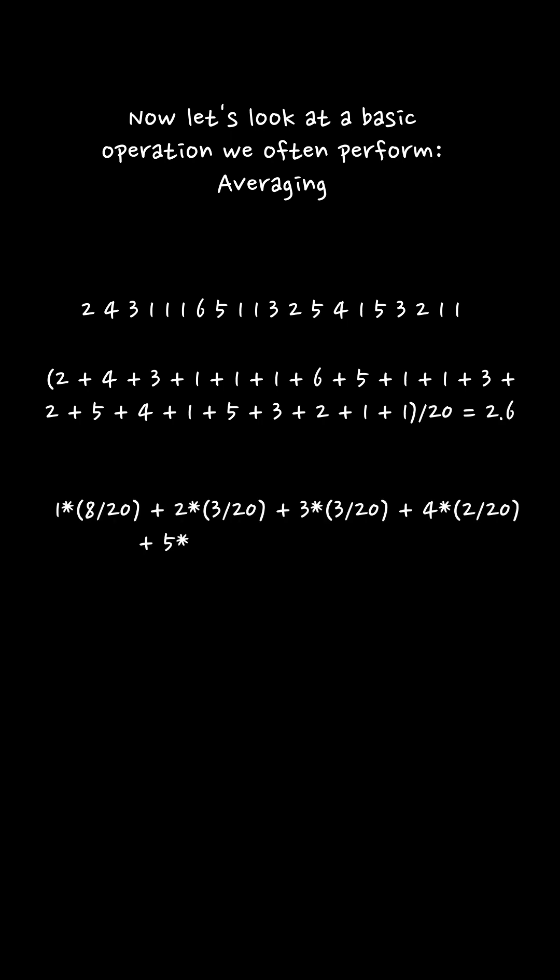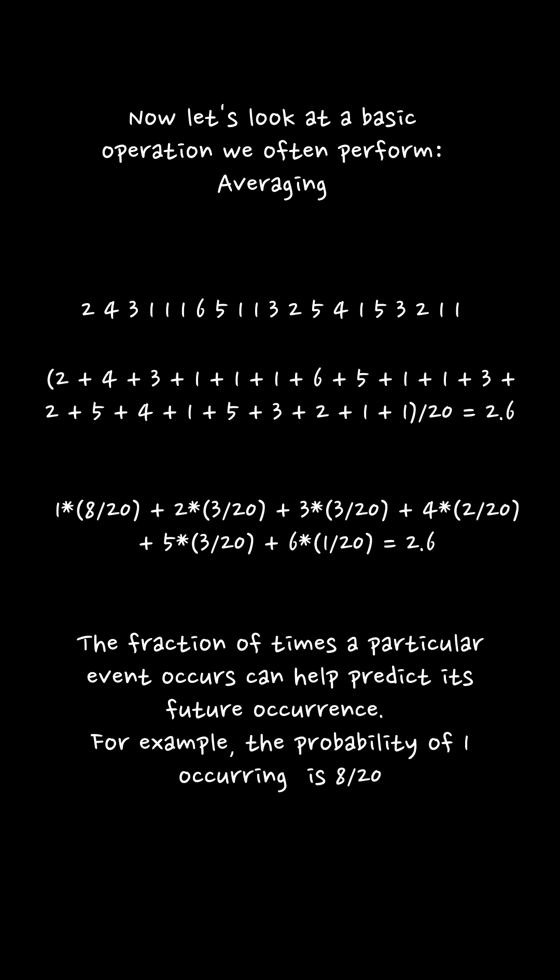But what if we consider the frequency of each outcome? We arrive at the same average value, but with an additional insight: the fraction of times a particular event occurs can help predict its future occurrence. This process of assigning a fractional value to each possible outcome of an experiment is essentially what a probability distribution does.